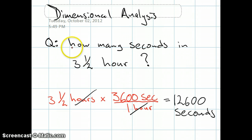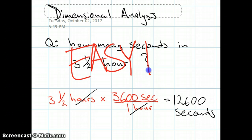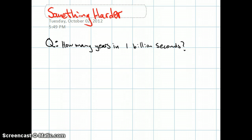You're probably thinking to yourself that this problem is really super easy. And it is, so let's do something harder. To answer the question of how many years are in 1 billion seconds, we will need multiple conversion factors. But again, we start out by writing our given number: 1 billion seconds.